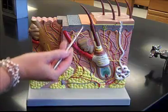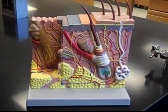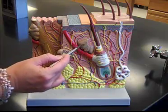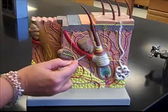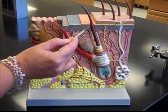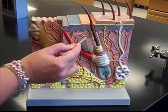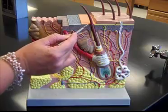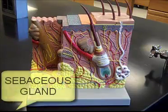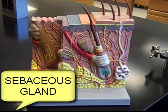Also associated with the hair, we have a gland. It kind of looks like saddlebags off to the side. It's going to secrete into the root and go up the shaft of the hair. That's our sebaceous gland — the oil gland. It secretes sebum, or body oil.